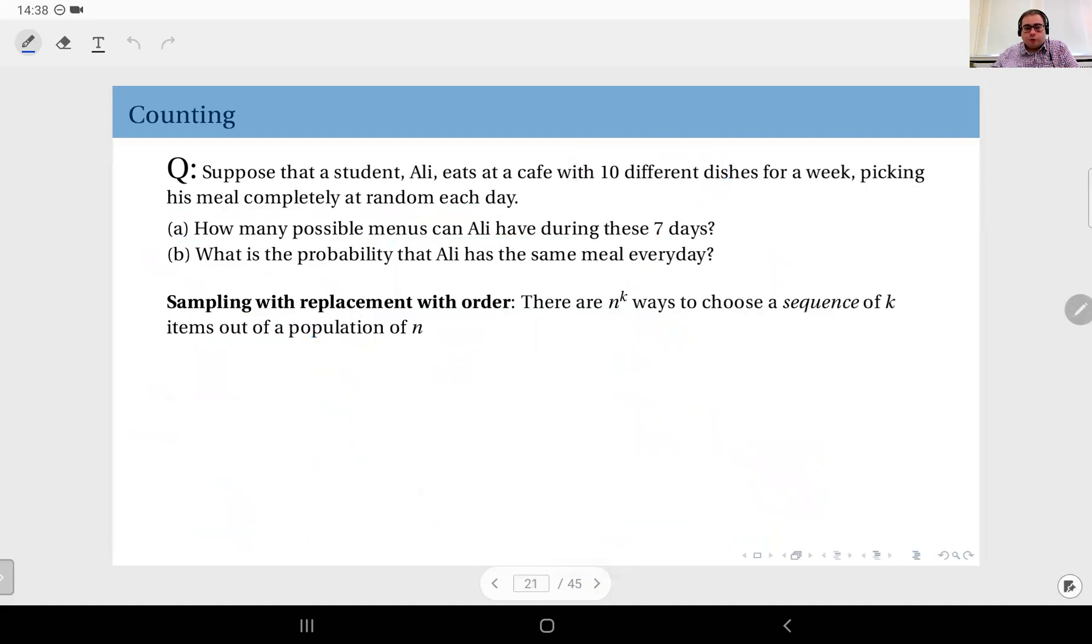we are going to call this scenario sampling with replacement with order. Recall, we care about the order. And what does replacement mean? Replacement here means that we can repeat our selection throughout the scenario. Recall that if you select dish one on day number one, you are not forbidden to select dish one again the next day or the other day. So that we call replacement. And sampling means you just select outcomes. So this scenario described in this question is sampling with replacement. That means you can repeat and with order. That means you care about the order.